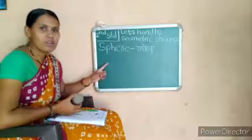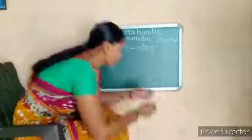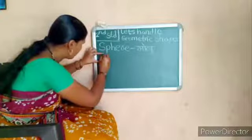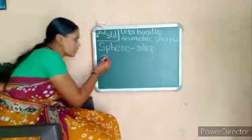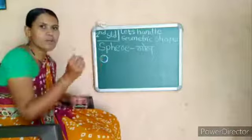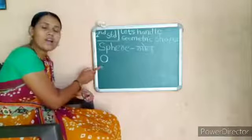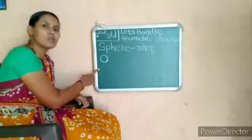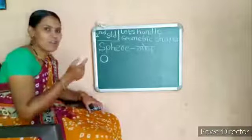I draw a figure here of a sphere. This is a sphere shape. Circle means in Marathi 'vartur.' Circle means vartur, and sphere means also gol — a kar ki. Sphere is also round.